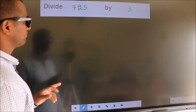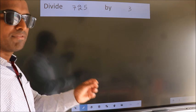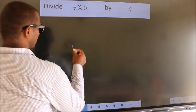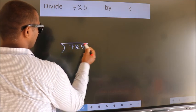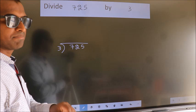Divide 725 by 3. To do this division we should frame it in this way. 725 here, 3 here. This is your step 1.